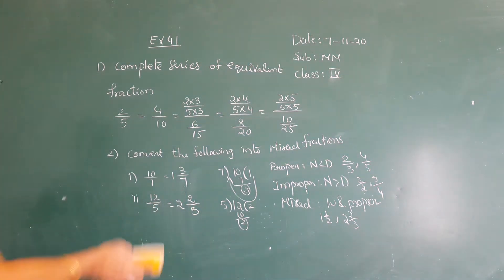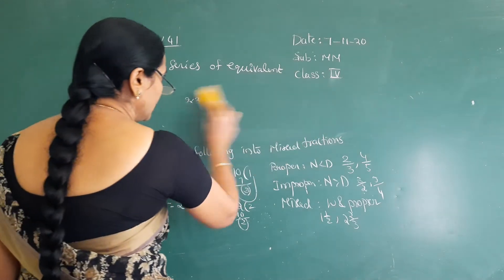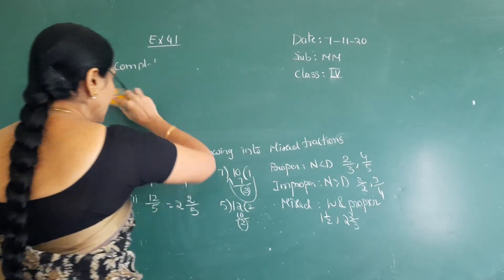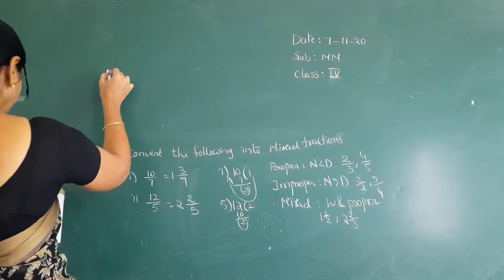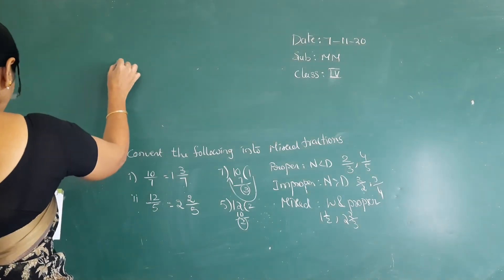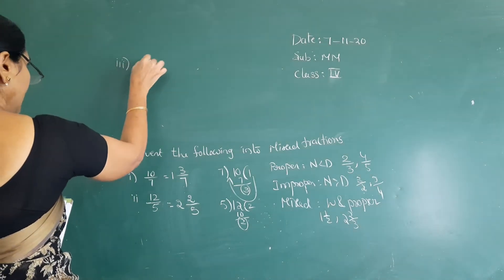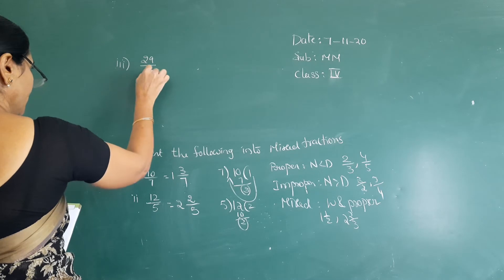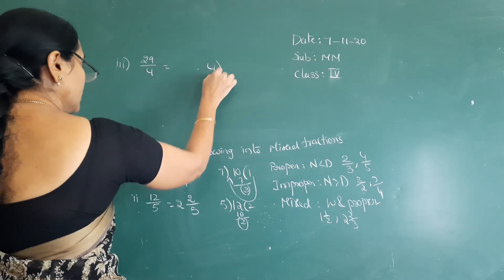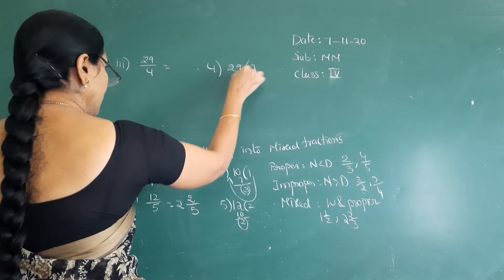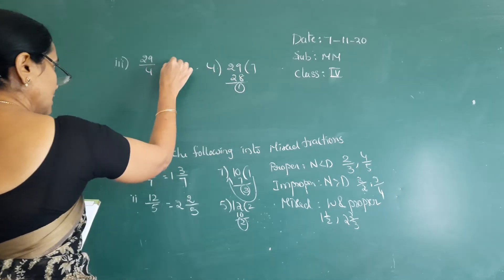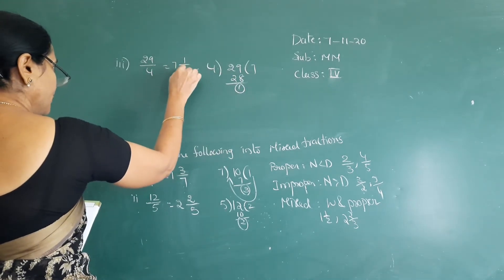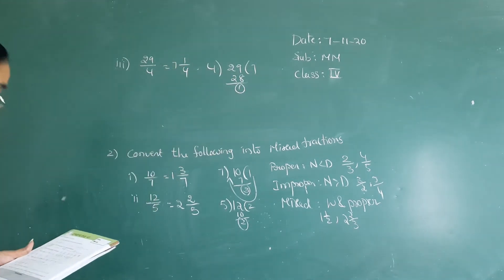You have to write the quotient as the whole part, the remainder as the numerator, and the divisor as the denominator. Third problem: 29 by 4. Divide 29 by 4: 4 sevens are 28, remainder 1. So the answer is 7 and 1 by 4.